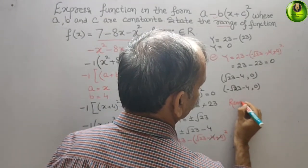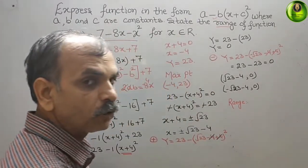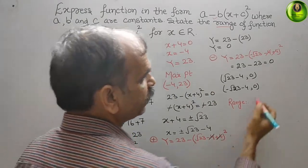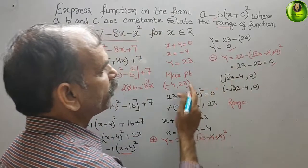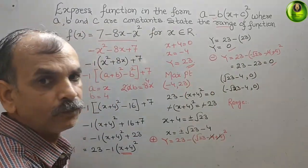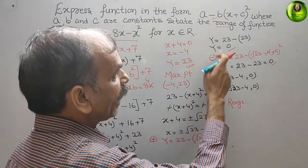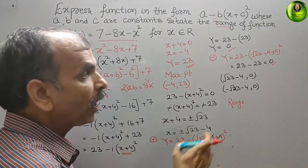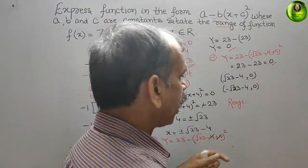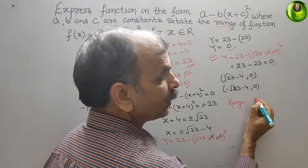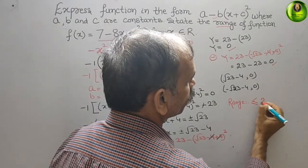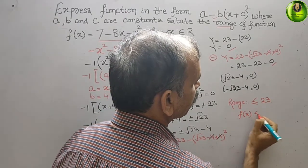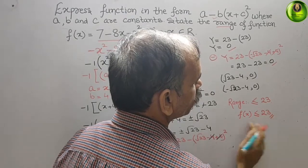For the range, we look at all the y values. We can see y equals 0 at both intercepts and y equals 23 at the maximum point. Since 23 is the maximum and 0 values are less, the range is f(x) less than or equal to 23.